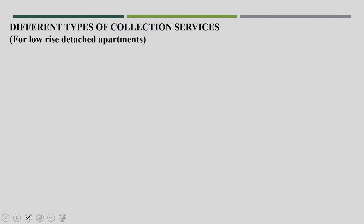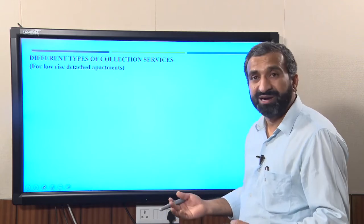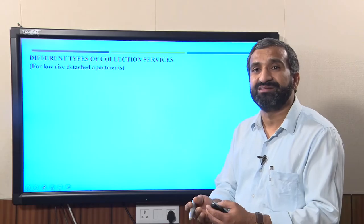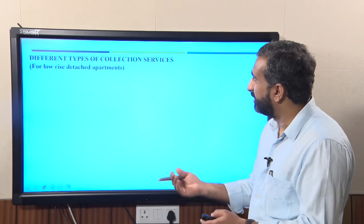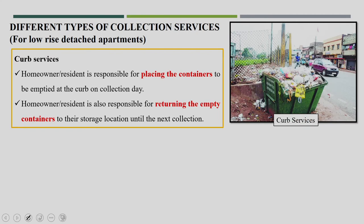There are different kinds of collection services that can be discussed based on different dwellings or apartment levels. We have discussed storage and dustbins at different apartment levels — low-rise buildings, high-rise buildings, medium-rise buildings — and what factors affect those storage locations. Similarly, the collection services will also be seen based on different detached apartments. For low-rise detached apartments, curb service is very well known, where the house owner or resident is responsible for placing the containers at the curb on the collection day.